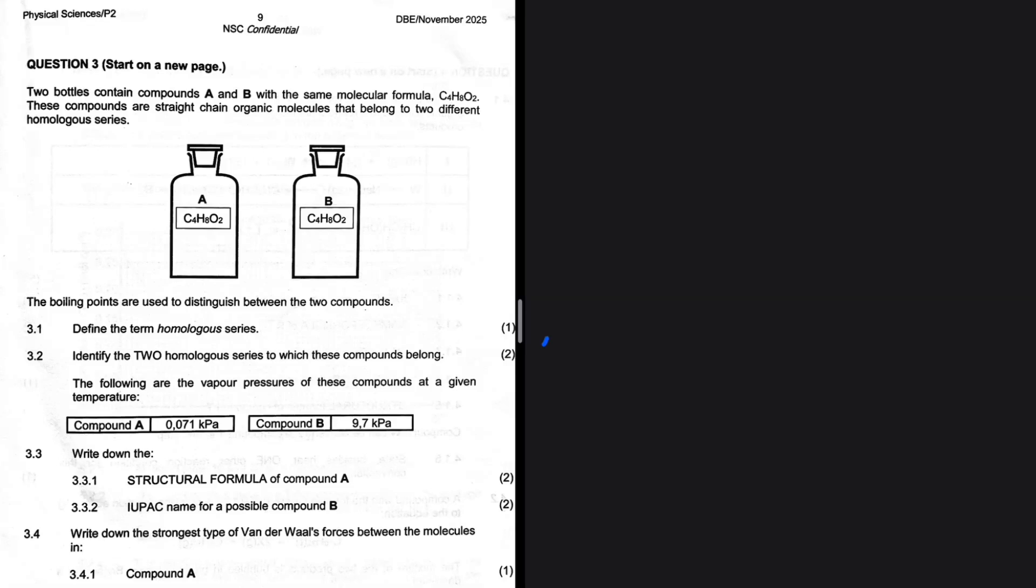Identify the two homologous series to which these compounds belong. Let's take a look. Two bottles contain compounds A and B with the same molecular formula C4H8O2. These compounds are straight chain organic molecules that belong to two different homologous series.